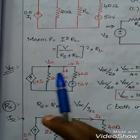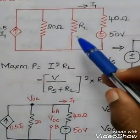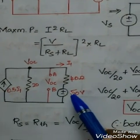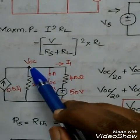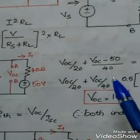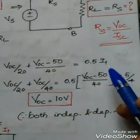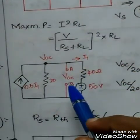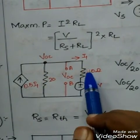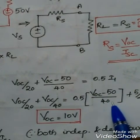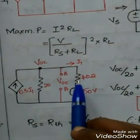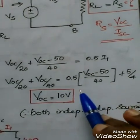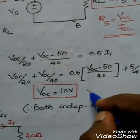First find the value of VOC. There is an open circuit voltage — just open circuit this particular branch, remove the load resistance RL, and find the value of VOC. All other values remain the same. This particular branch also has a potential VOC. Applying KCL in this node, how to find the value of I1? I1 is nothing but VOC minus 50 divided by 40. Just substitute the value of I1 — every term has VOC alone. Equating, you can easily find the value of VOC. VOC value is 10 volts.